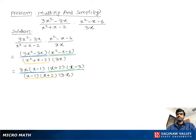Now we cancel: (x - 1) cancels, (x + 2) cancels, and 3x cancels. We are left with (x - 3), where x ≠ 0, x ≠ 1, and x ≠ -2.